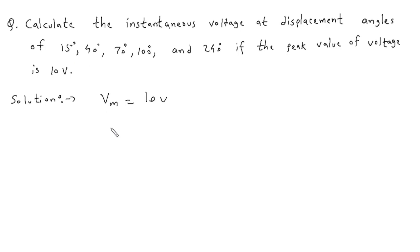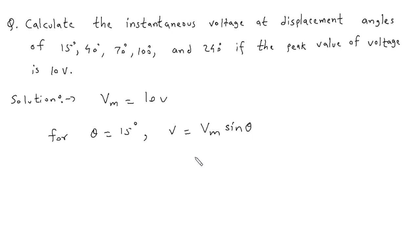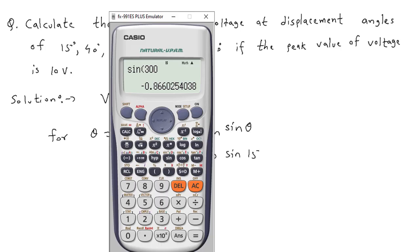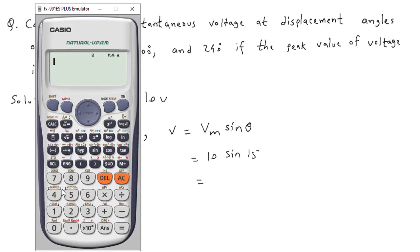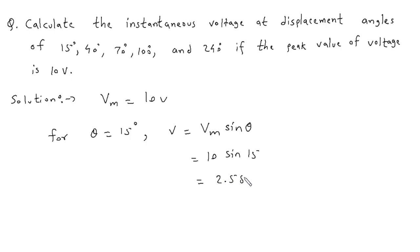Here peak voltage is 10 volt, meaning Vm is equal to 10 volt. For theta equal to 15 degrees, instantaneous voltage V is equal to Vm sin theta, where theta is displacement angle. Vm is 10 volt, so 10 sin 15 equals 2.58 volt.